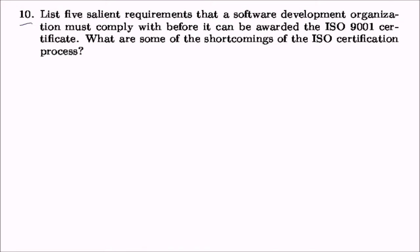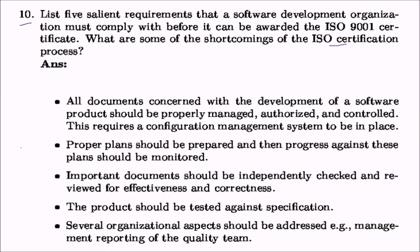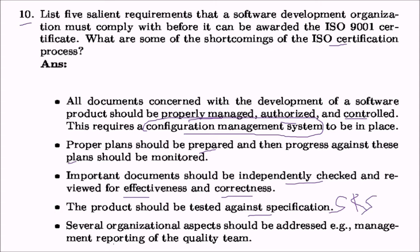List five salient requirements an organization must comply with before being awarded ISO 9001 certification. First, all documents concerned with the development of software products should be properly managed, authorized, and controlled — this requires a configuration management system (SCM). Next, proper plans should be prepared and progress against these plans should be monitored. Whatever document you make, you must conform to it. Important documents should be independently checked and reviewed for effectiveness and correctness, and the product should be tested against the specification (SRS). Several organizational aspects should also be addressed, such as management reporting to the quality team.